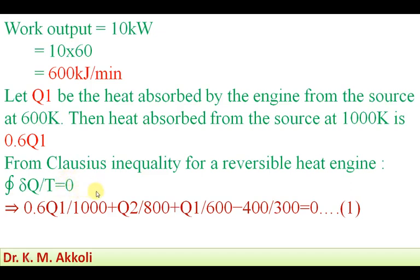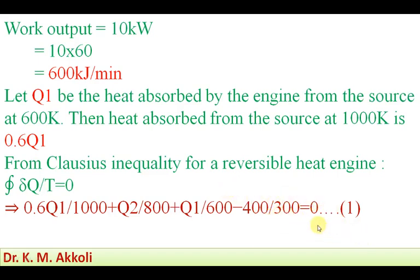Applying the Clausius inequality: the heat from the 1000 Kelvin source is 0.6 Q1, divided by 1000; plus Q2 divided by 800; plus Q1 divided by 600; minus Q4 divided by T4, that is 400 divided by 300; equals zero. This is taken as equation 1.